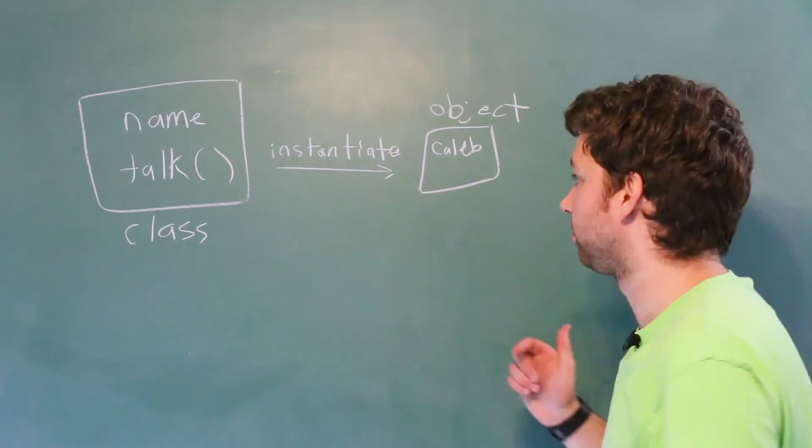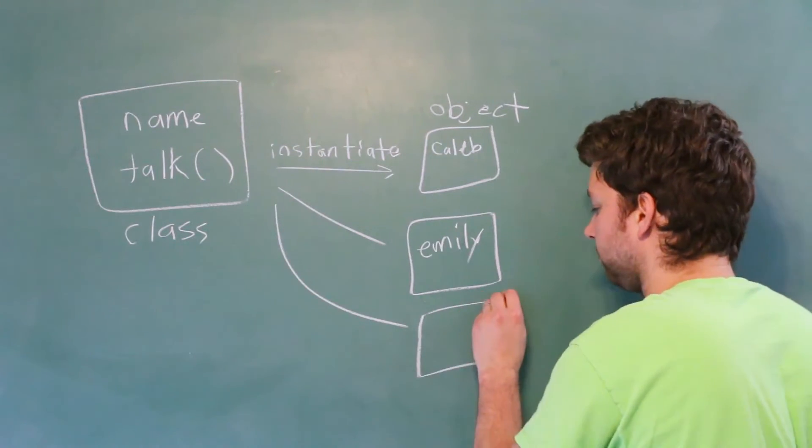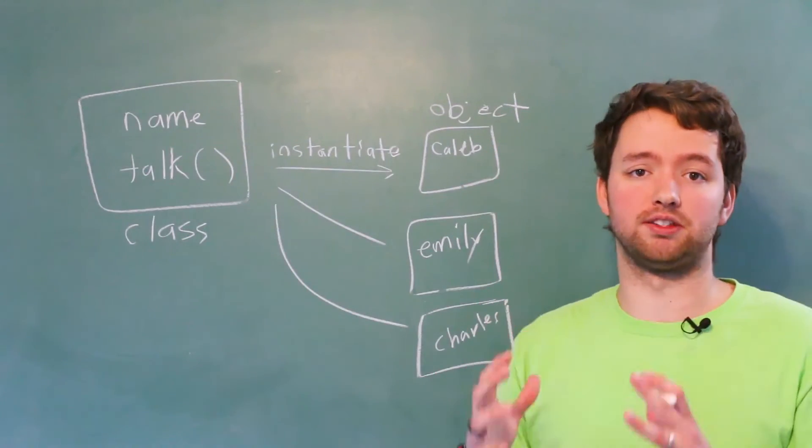That's one object. We can make another one. We have Emily and another one, Charles. So the class allows us to make numerous entities that are very similar.